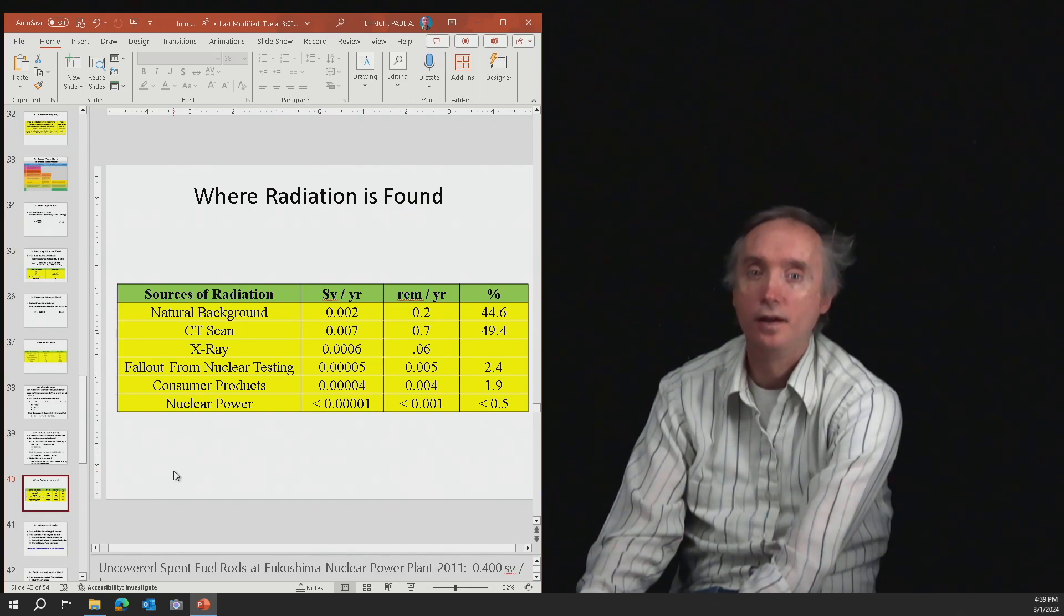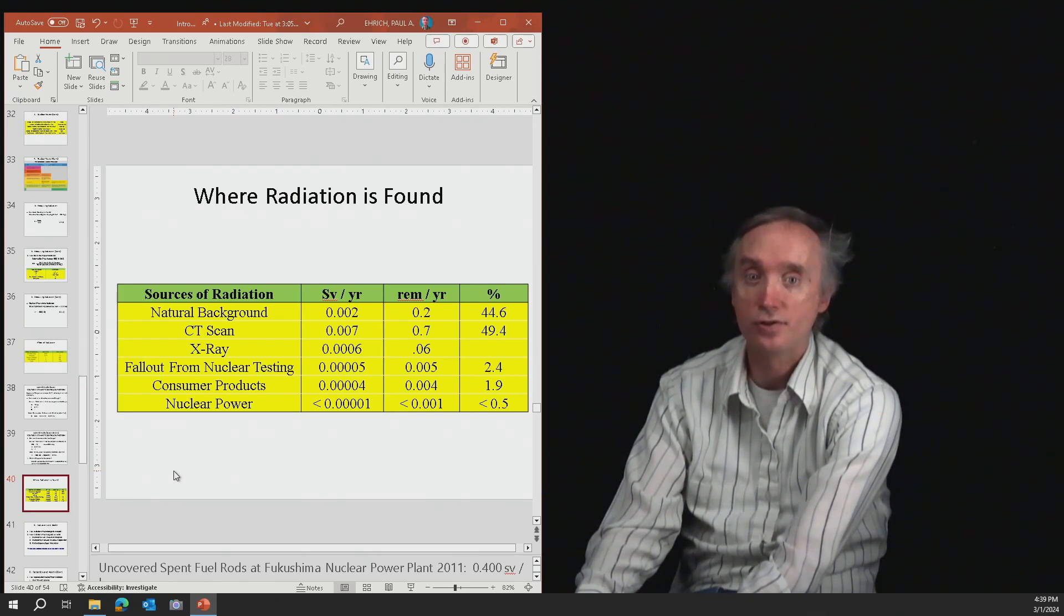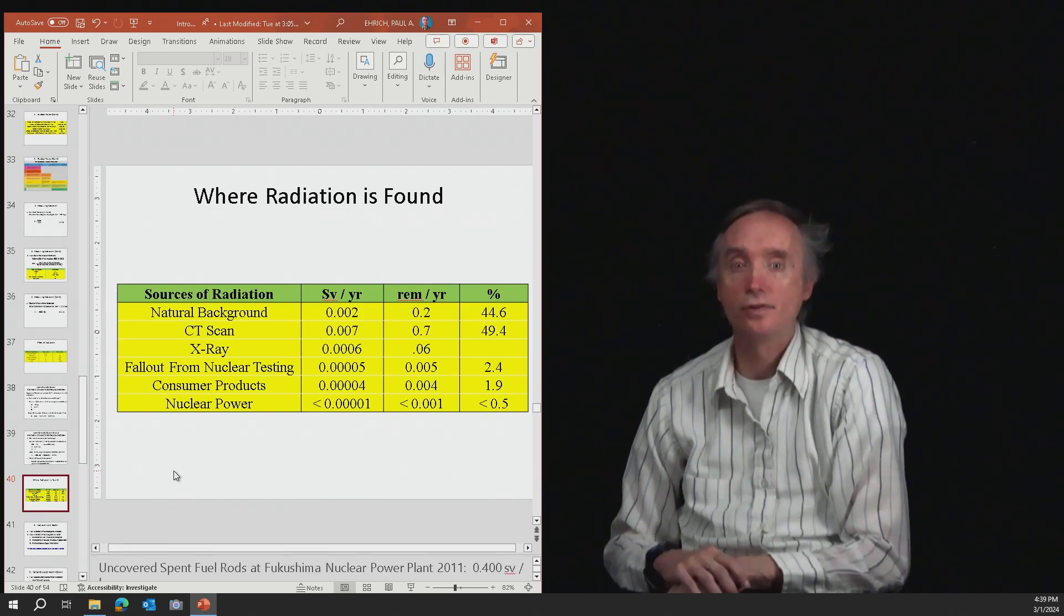Okay? Then what about, and then the percent of radiation that you receive every year, 44% of that radiation is coming from the background. So it's stuff that you just naturally interact with.